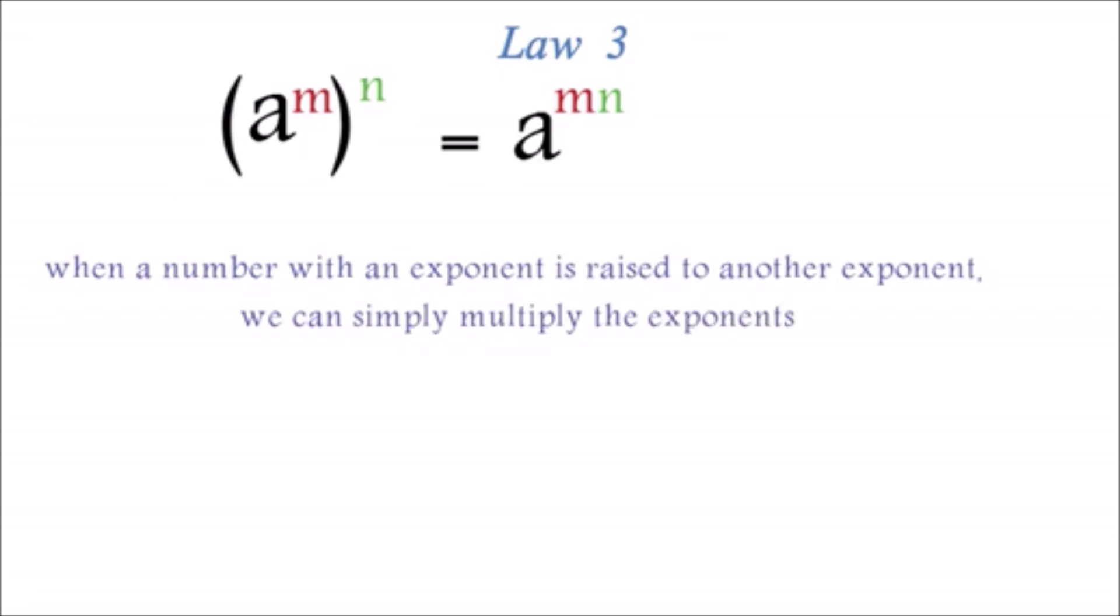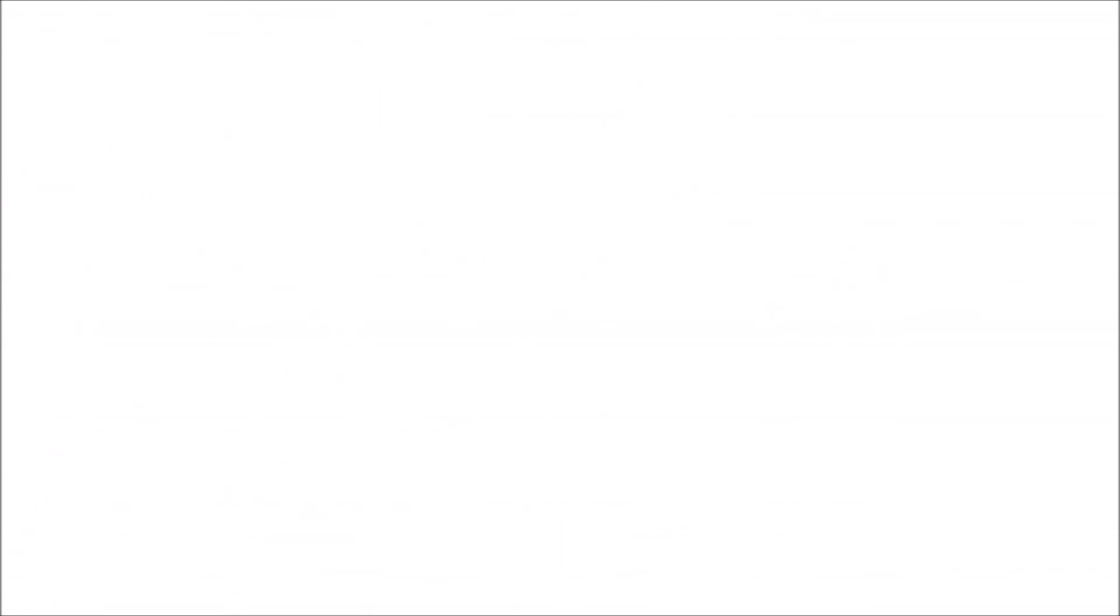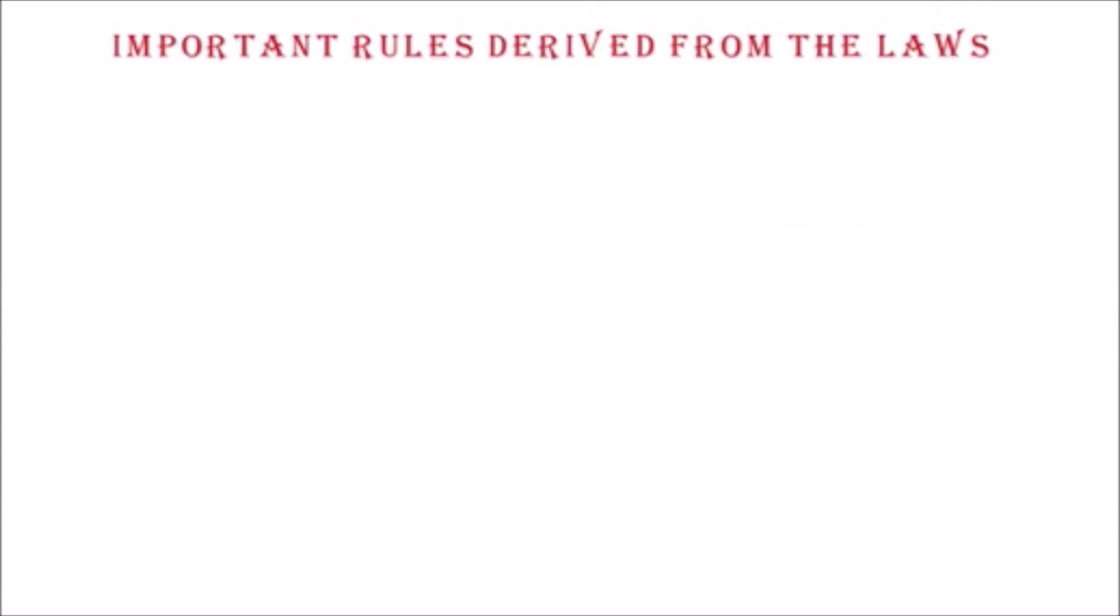Example: into parentheses a squared all cubed equals a exponent 2 by 3. This is equal to a exponent 6. Notice how we just multiplied the 2 and 3.